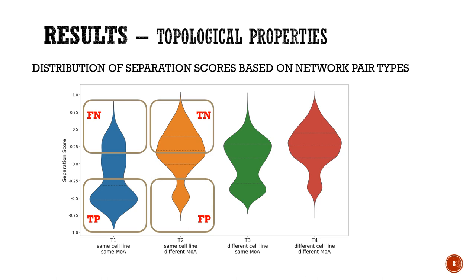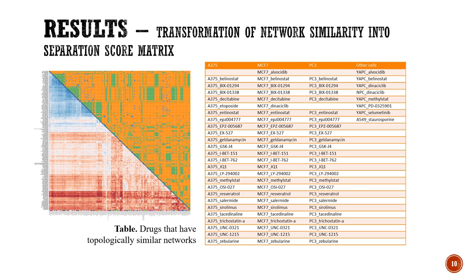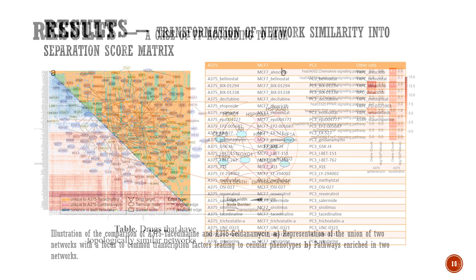This plot shows the distribution of separation scores based on network pair types. To systematically evaluate the performance of this method, we compared the results against the ground truth that drugs with the same mechanism of action will have similar networks. We prepared the separation score metrics of all conditions. From this heat map, we observe a group of cell line drug conditions that have overlapping networks. These similarly acting drugs are listed in the table and there are drugs with different mechanisms of action and/or chemical structures.